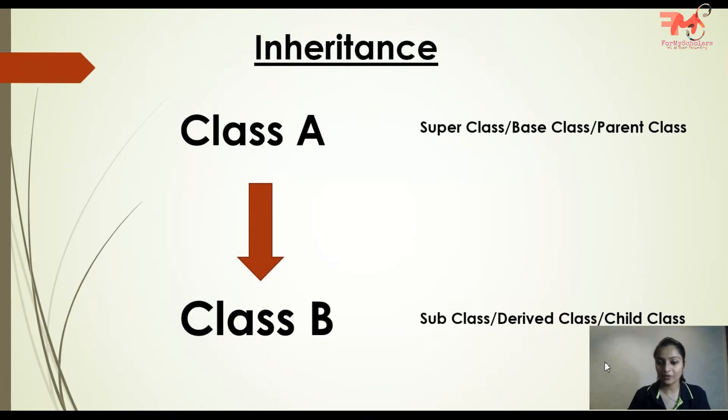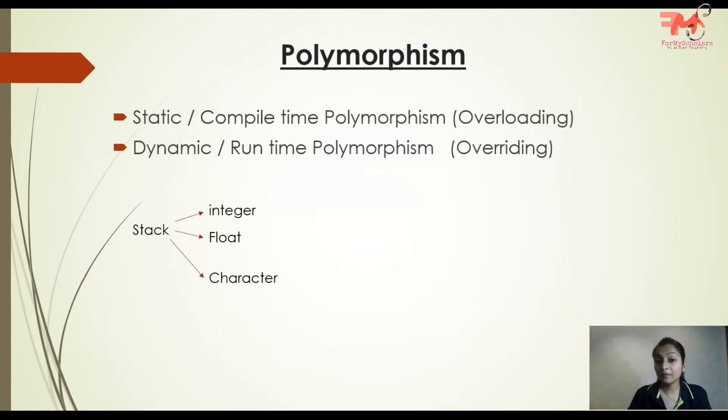Second property is polymorphism. The basic word meaning is multiple behaviors. If a single entity represents multiple behaviors, then we say that particular entity has the polymorphism property. Let's suppose we have a class and in that class I want to implement a function that is a stack.